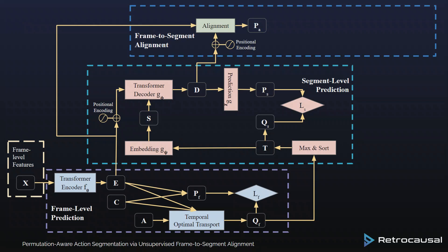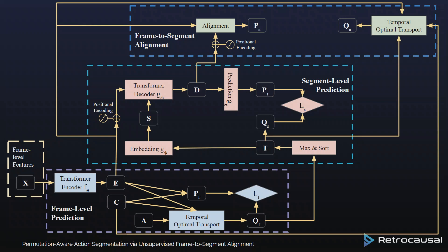Finally, we add the frame-to-segment alignment module, which takes the frame-level features represented by E and the segment-level features represented by D, and performs cross-attention between both, giving us refined frame-level predictions. We also use a modified temporal optimal transport module which takes the order from transcript T and computes permutation-aware pseudo-label codes QA, where the order is defined by transcript T. We use the cross-entropy loss between the alignment-level pseudo-label codes QA and the alignment-level predicted codes PA.